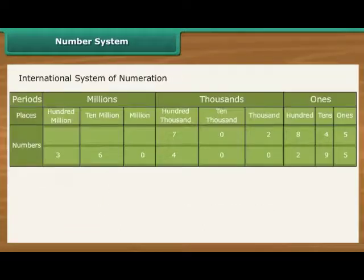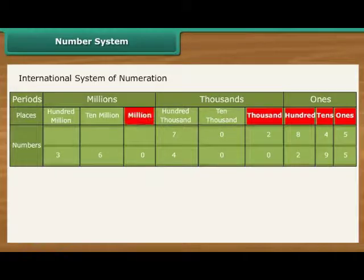In the international system of numeration, as it is being used, we have ones, tens, hundreds, thousands, and then millions. One million is a thousand thousands.